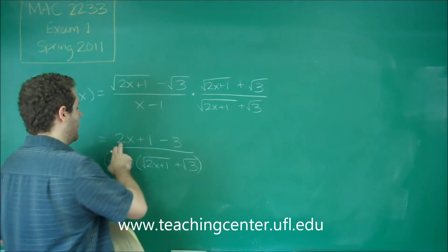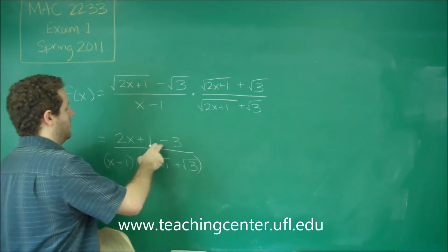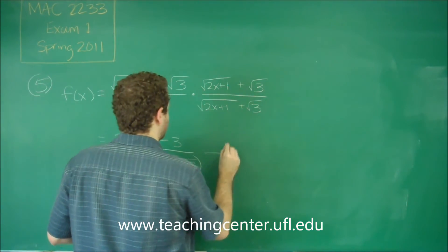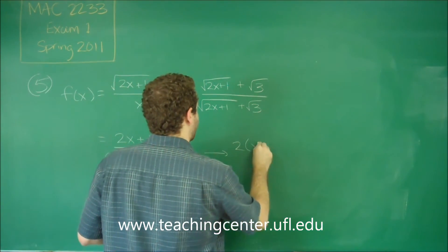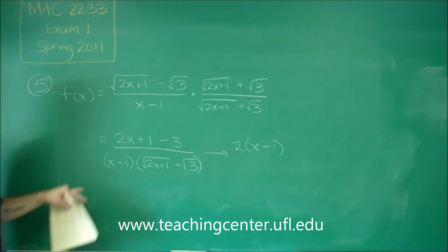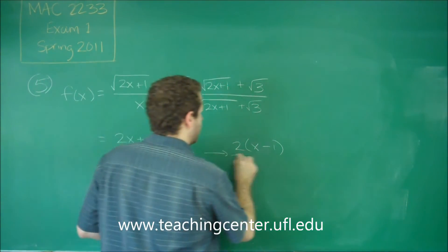Let's see if that worked out on top. We got 2x plus 1 minus 3, which is 2x minus 2. We can factor 2 out of that. We get 2 times x minus 1. You can see then we're going to get that to cancel out.